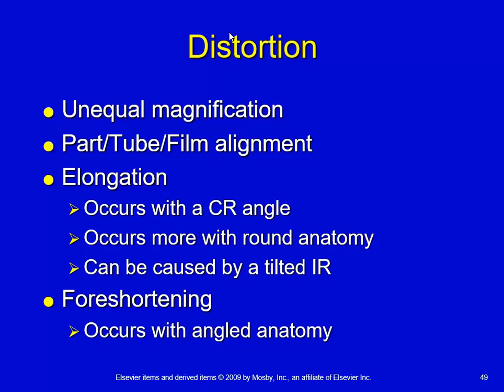An increase in OID of one end of an object is going to give you foreshortening. Whenever you have angled anatomy, you have very low OID with one end and an increase in OID with the opposite end. So with angled anatomy, what you get is foreshortening, as opposed to elongation, where most of the time you have central ray angulation or a tilted image receptor.